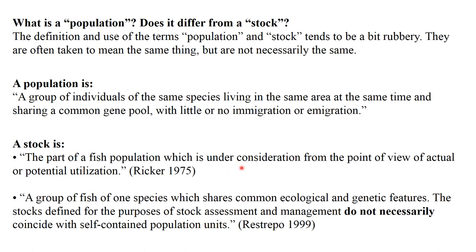On the other hand, the stock is a part of the fish population which is under consideration from the point of view of actual or potential utilization — a definition given by Ricker in 1975. Later, Restrepo in 1999 defined stock as a group of fish of one single species sharing a common ecological and gene pool, defined for the purpose of stock assessment and management, which does not necessarily coincide with a self-contained population unit.